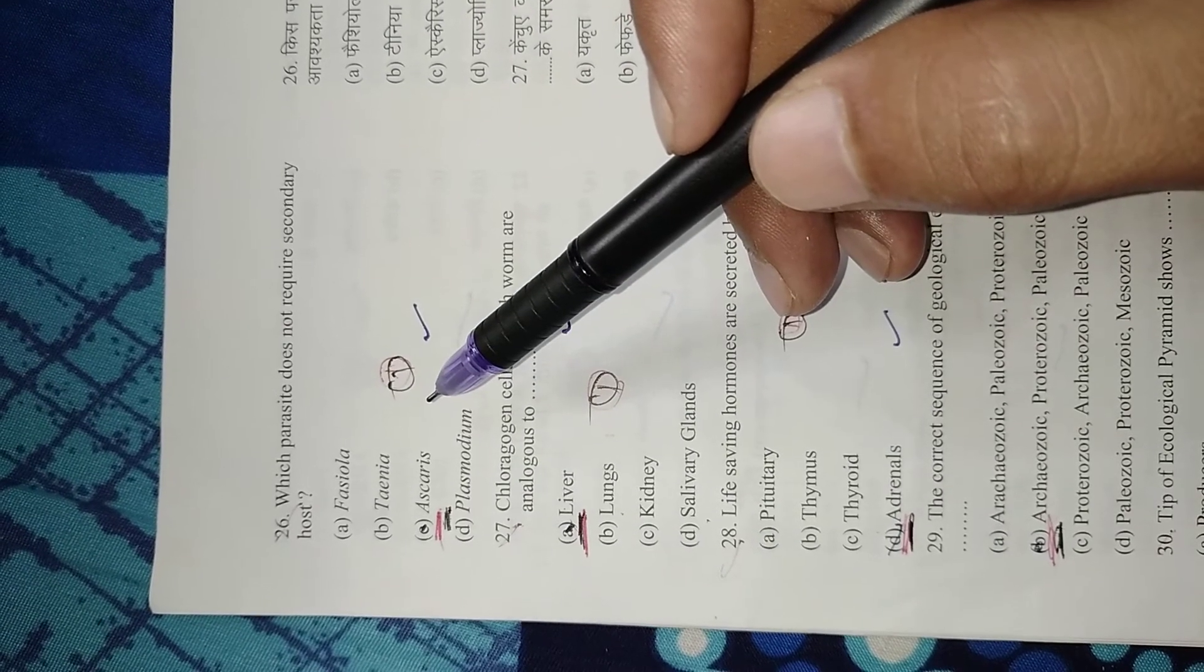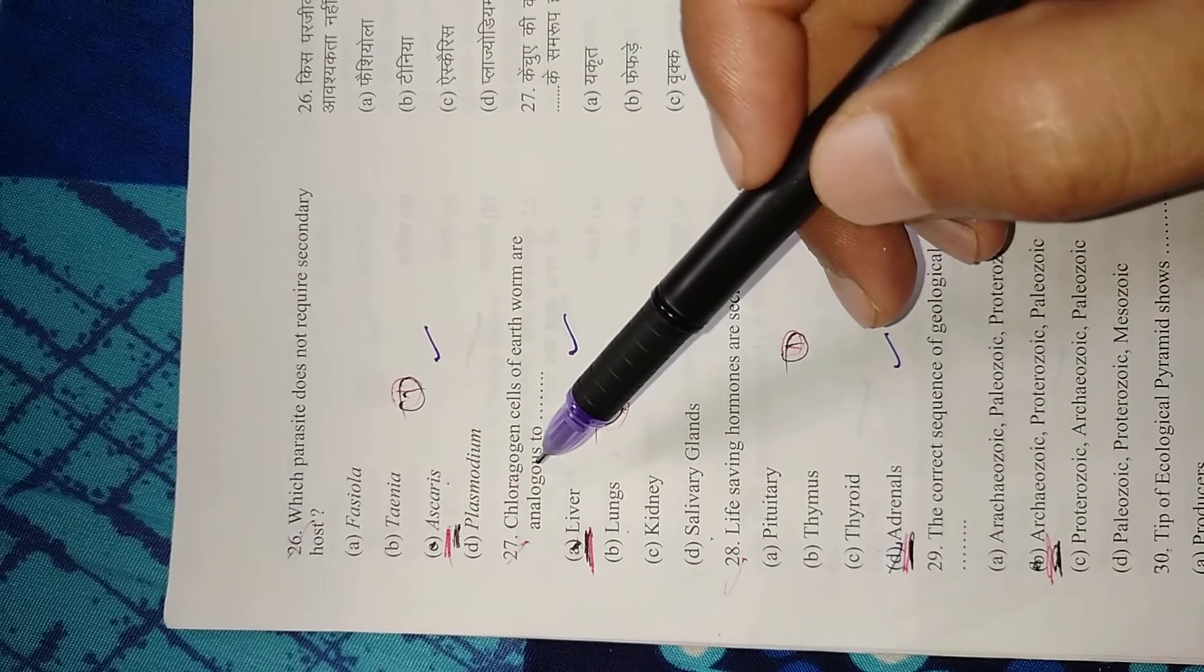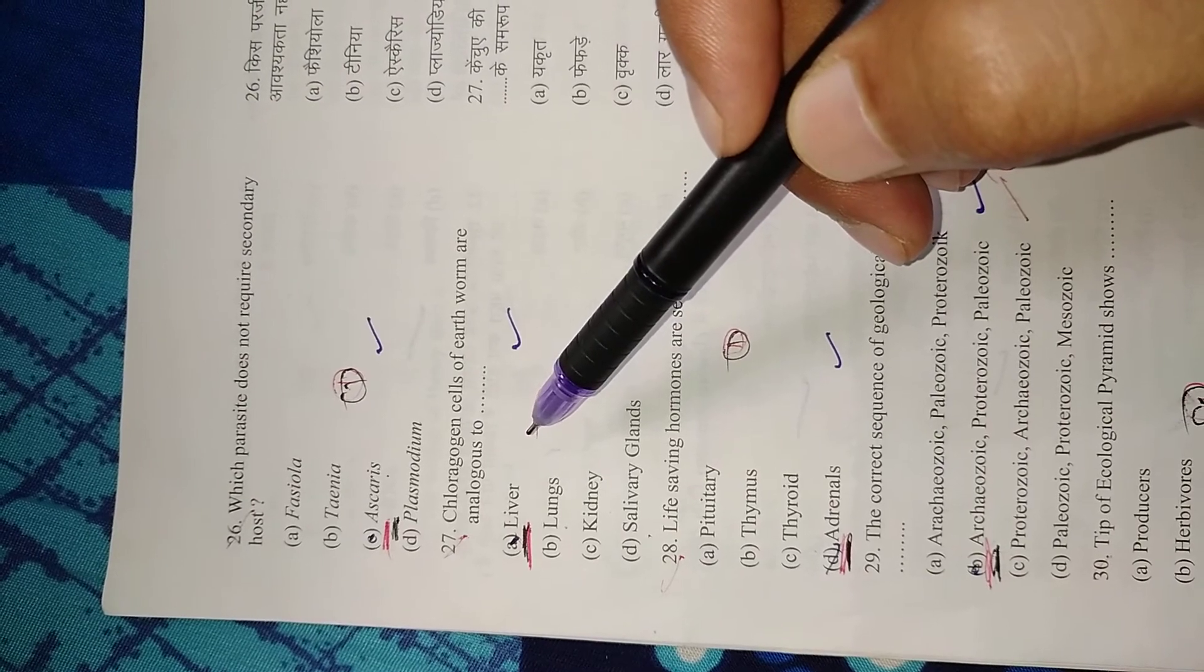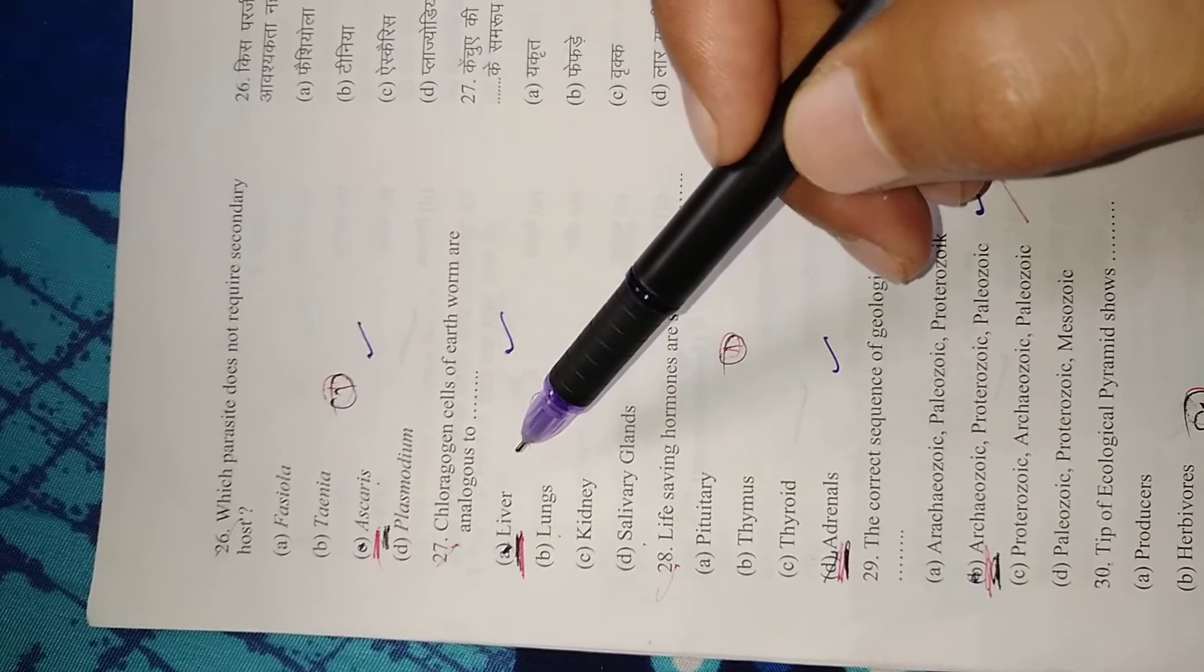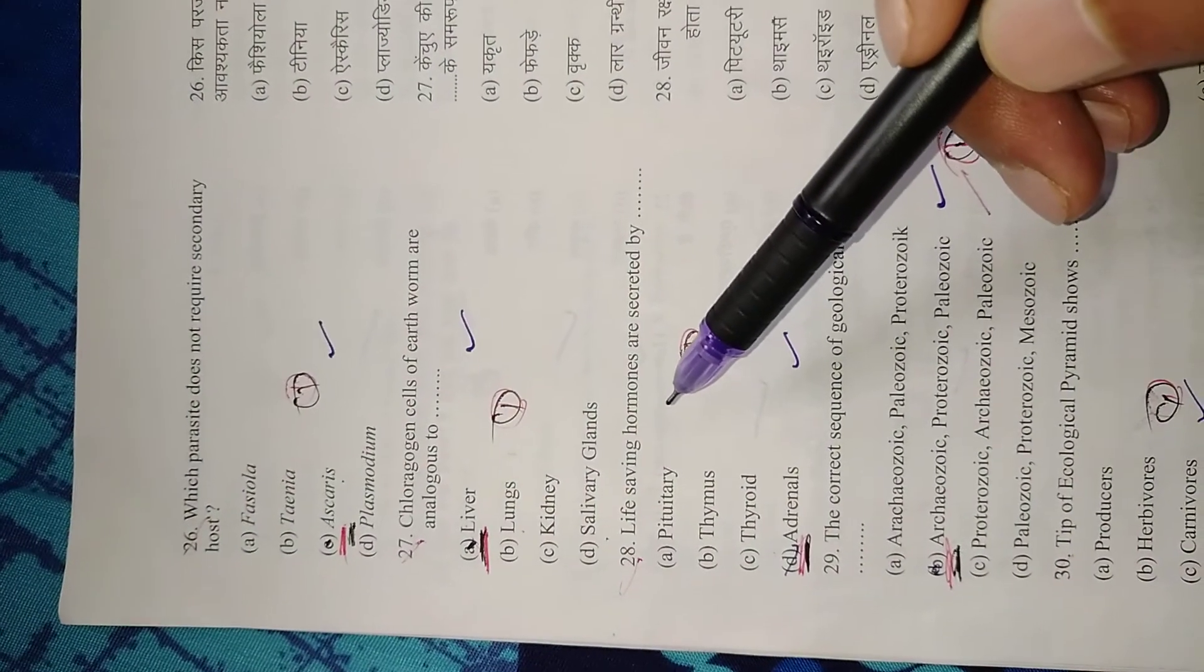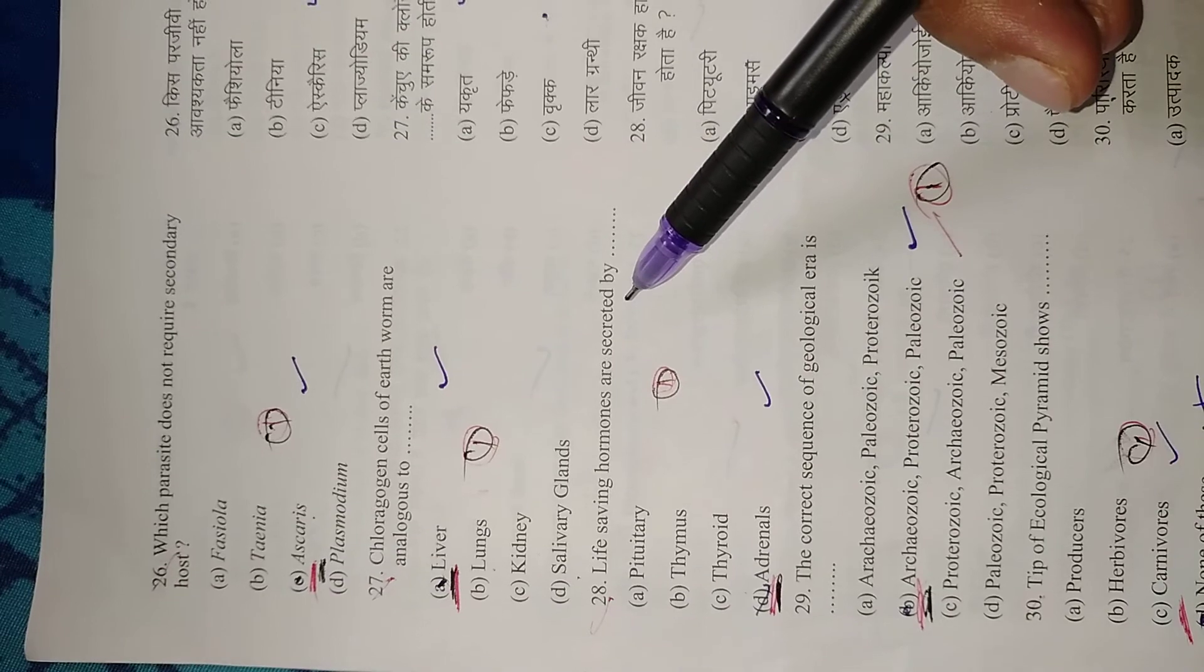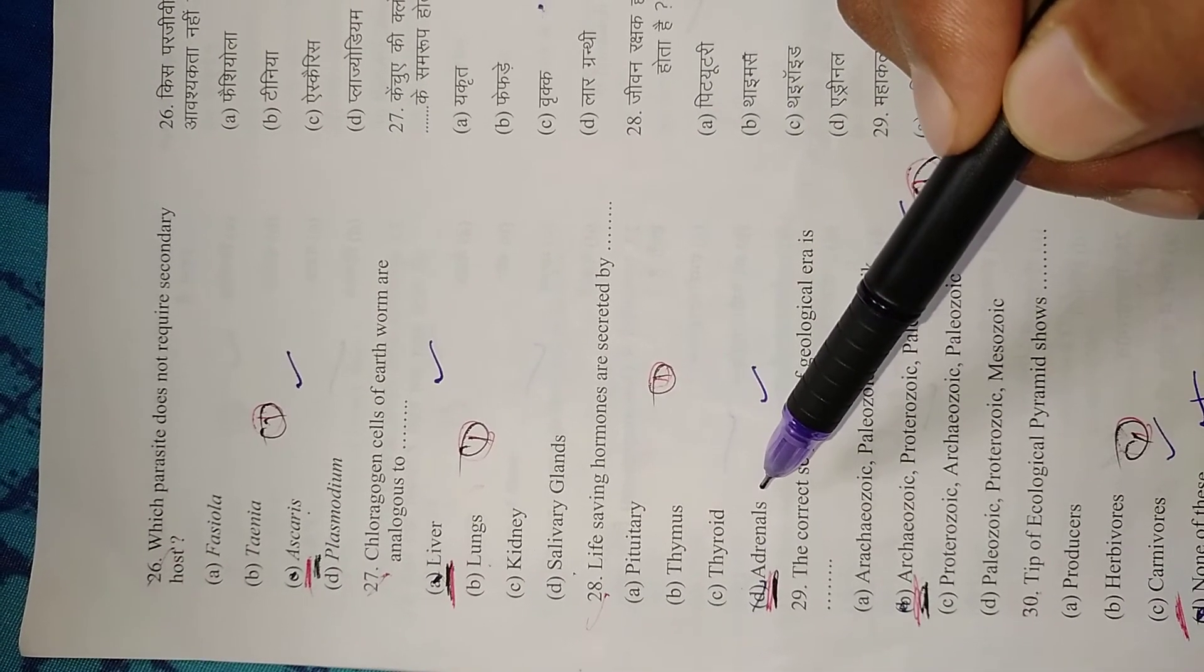Question 27: Chloragogen cells of earthworm are analogous to liver. Their function is to store fats and detoxify substances. Right option is A, liver. Question 28: Life-saving hormones are secreted by the adrenal glands. These are adrenalin and noradrenalin. Right option is D, adrenal.